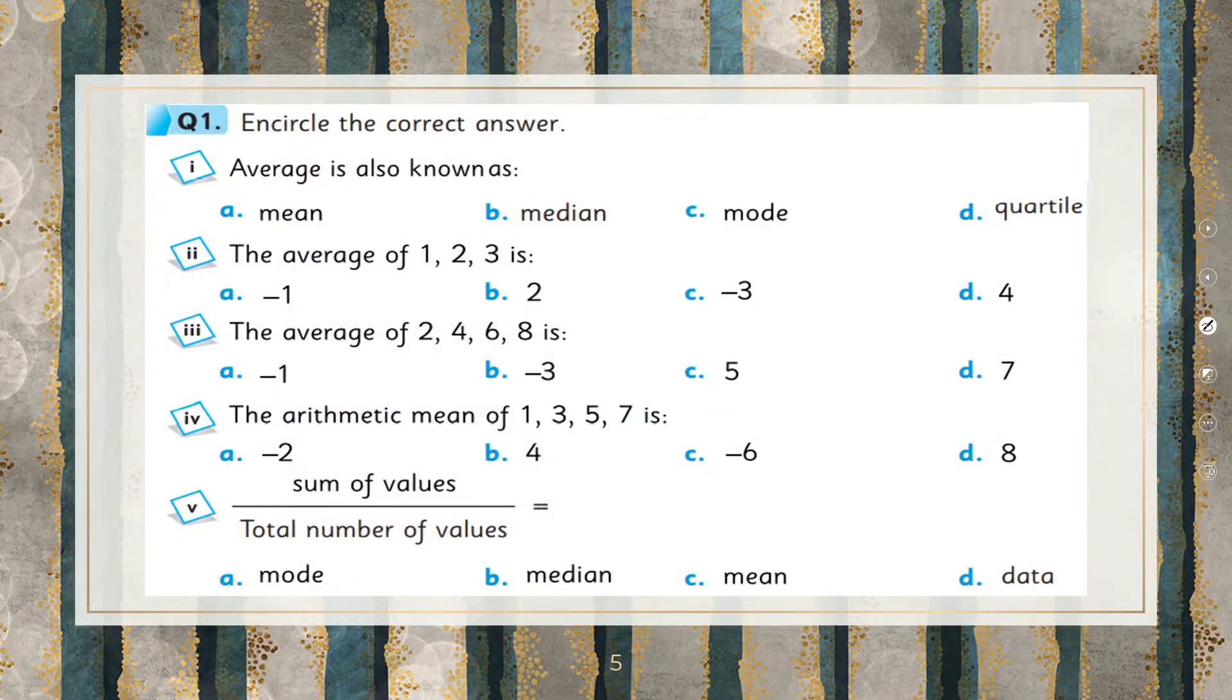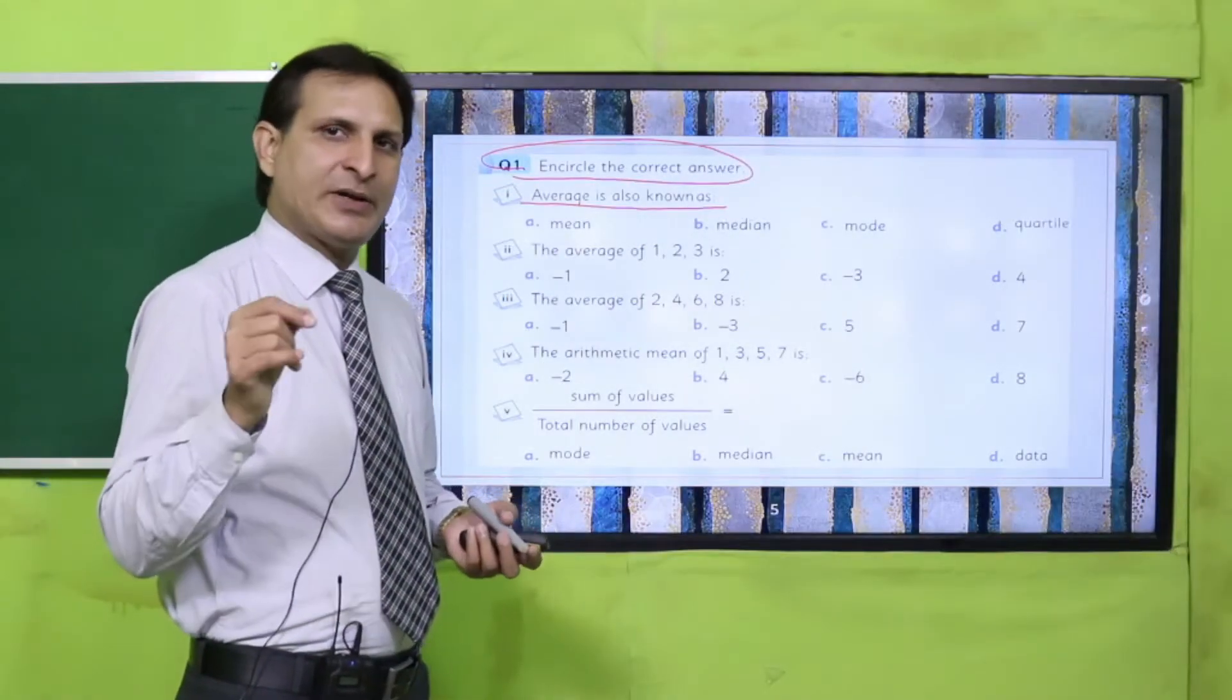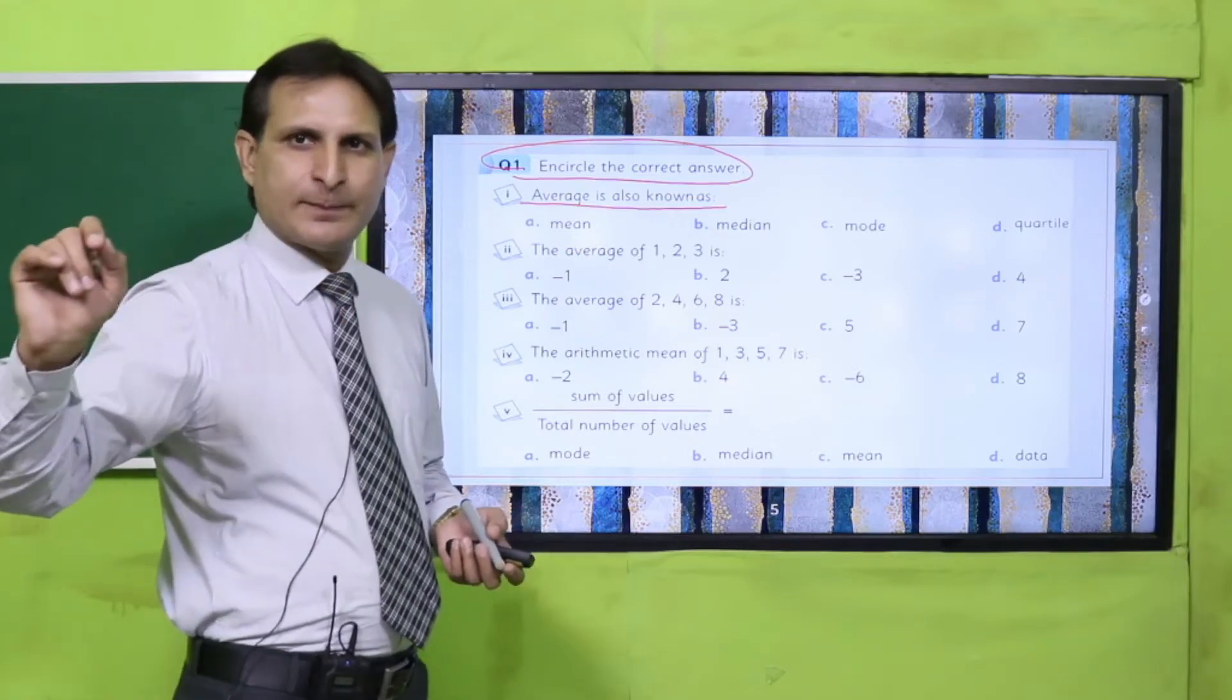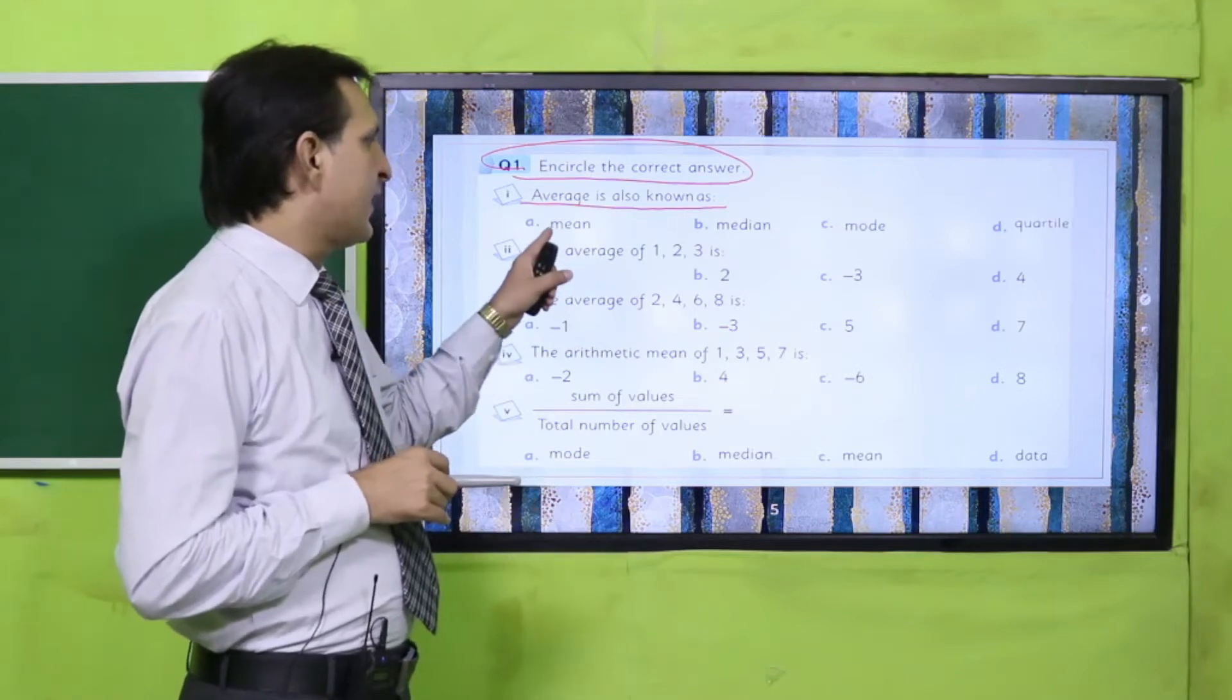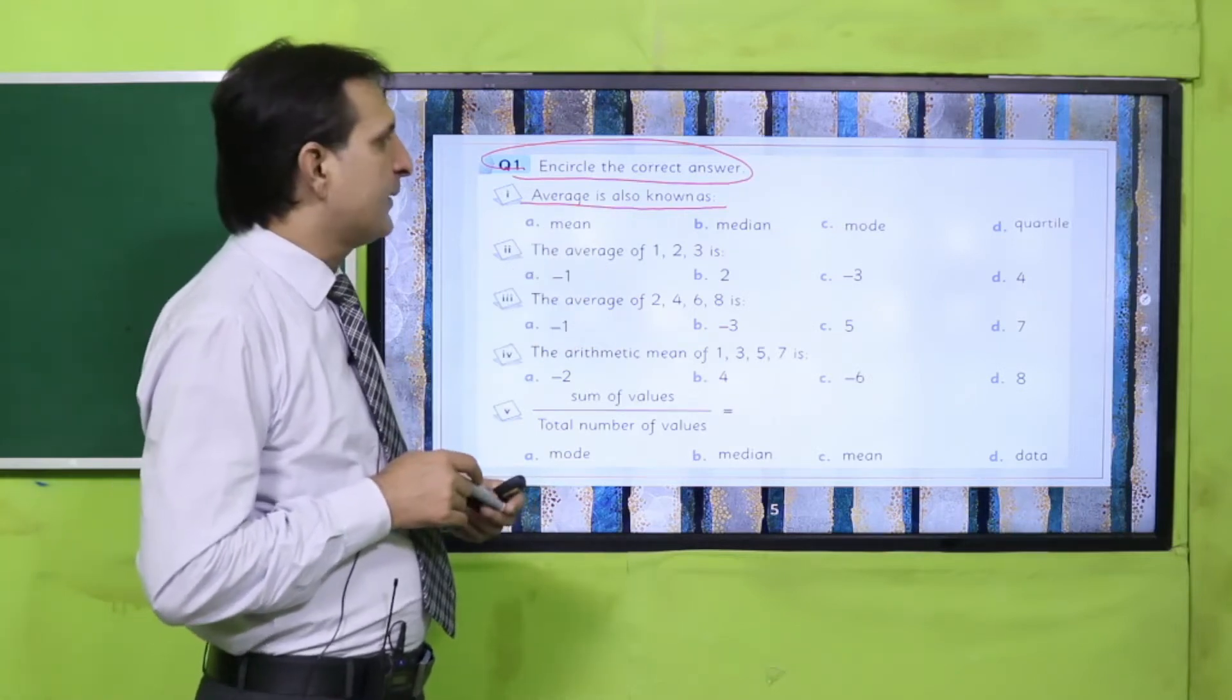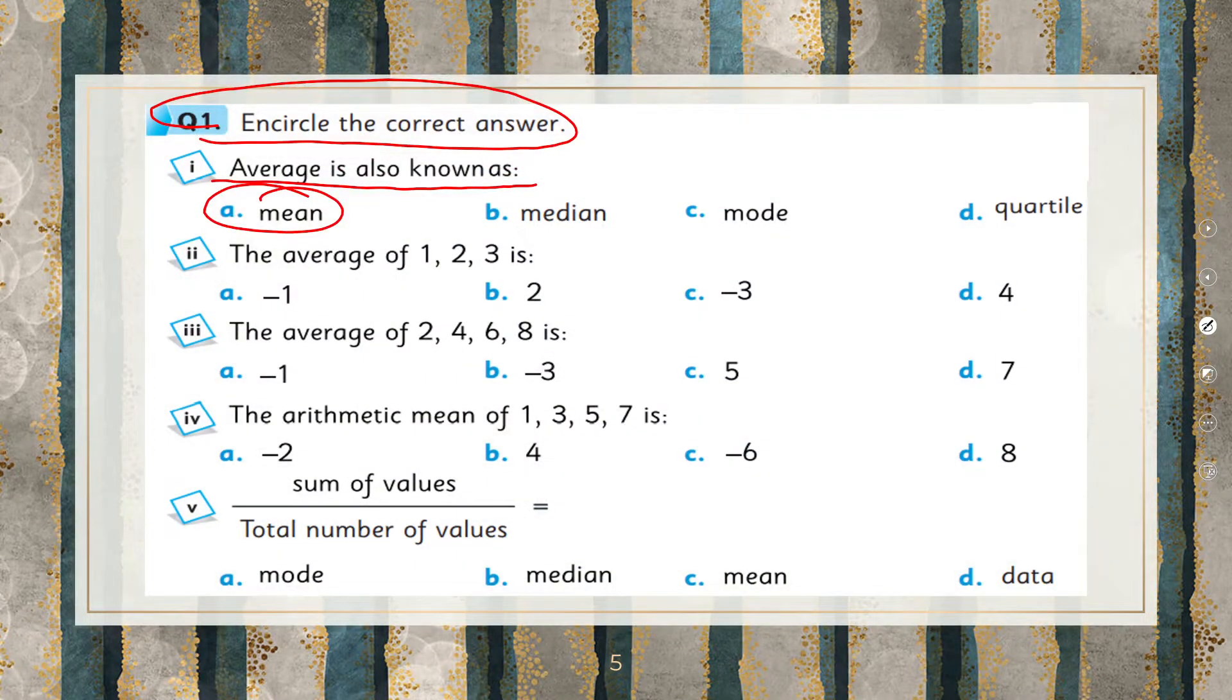Question number 1: Circle the correct option. In each part there are four options and you can select the correct option. Average is also known as what? Average का दूसरा नाम क्या है? Sum of numbers divided by number of quantities. So average का second name is mean. The first option is correct, so we encircle it.